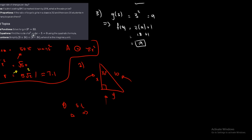To solve for x, I'll use cosine. Cosine of 30 equals the adjacent over the hypotenuse, so x equals 10 cosine 30. Using a calculator, 10 cosine 30 gives 5 root 3. So the first side length is 5√3. For y, we can use either Pythagoras' theorem or a trig ratio.